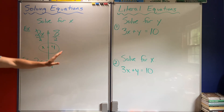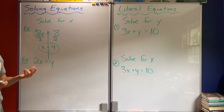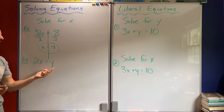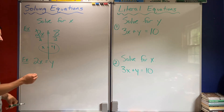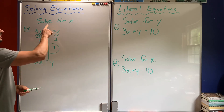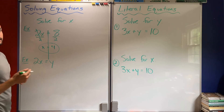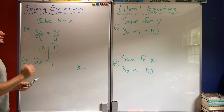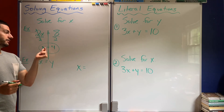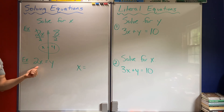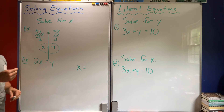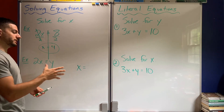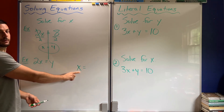A literal equation contains two or sometimes multiple different variables. Look at the difference: this said 2 times x equals 8, but this says 2 times x equals y. So it's two unknown amounts — x and y. But the goal is still the same: solve for x, which means I want to get x by itself. I want my answer to be x equals something.